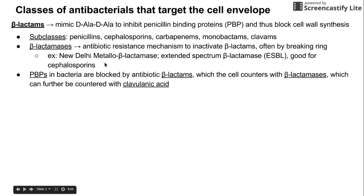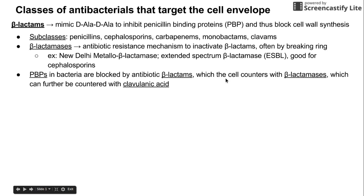To wrap it up: PBPs in bacteria are proteins that bind two D-ala-D-ala subunits together. These proteins are blocked by beta-lactams. Bacteria counter with beta-lactamases, which are further countered by clavulanic acid. So: beta-lactams inhibit PBPs, beta-lactamases inhibit beta-lactams, and clavulanic acid inhibits beta-lactamases — it's like humans and bacteria constantly one-upping each other, developing new weapons.